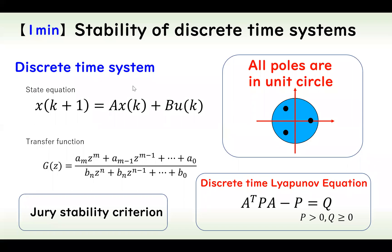I'll explain stability of discrete time systems in this slide. The discrete time system is given in this form. The state equation and transfer function are given like this.